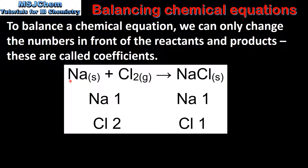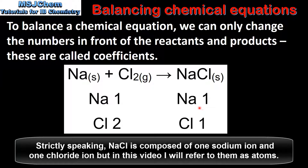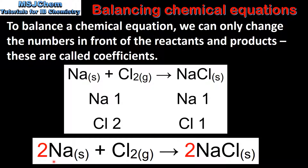In this unbalanced equation we have the reaction of sodium with chlorine to produce sodium chloride. The first step to balance this equation is to count the number of atoms in both the reactants and the products. In the reactants we have one sodium atom and two chlorine atoms. In the products we have one sodium atom and one chlorine atom. To balance this equation we put a two in front of the sodium and a two in front of the sodium chloride. We now have the same number of atoms in the reactants and the products.